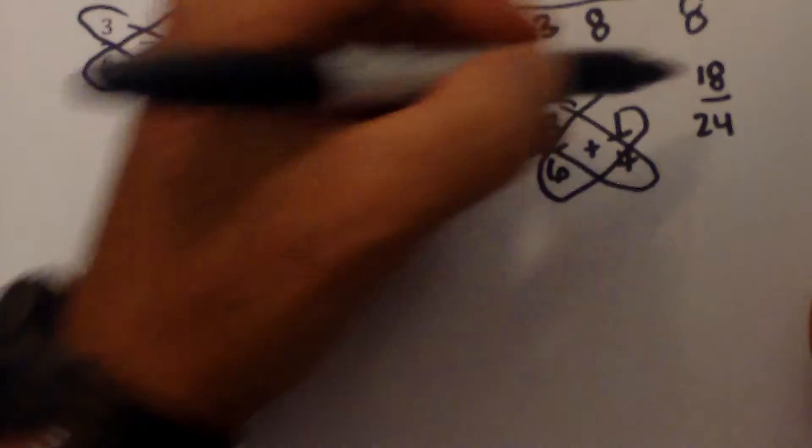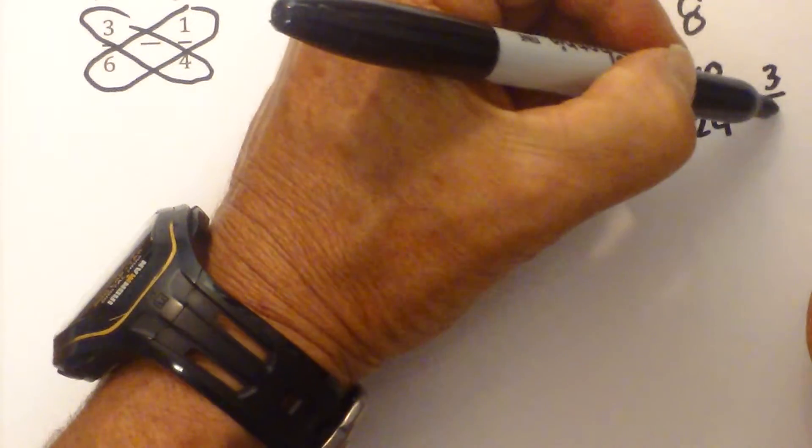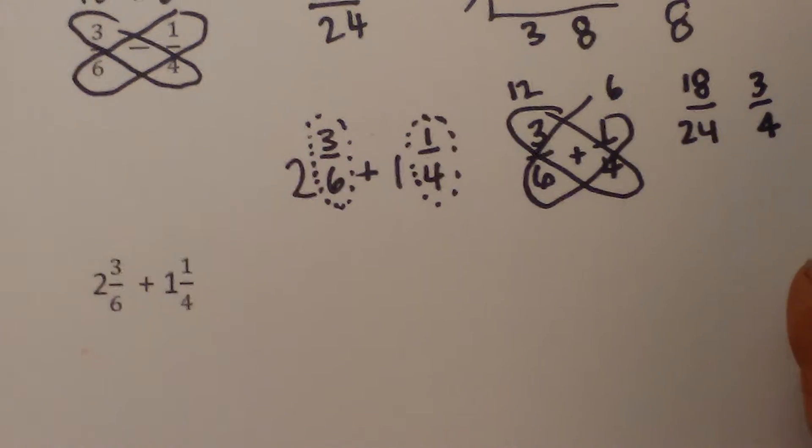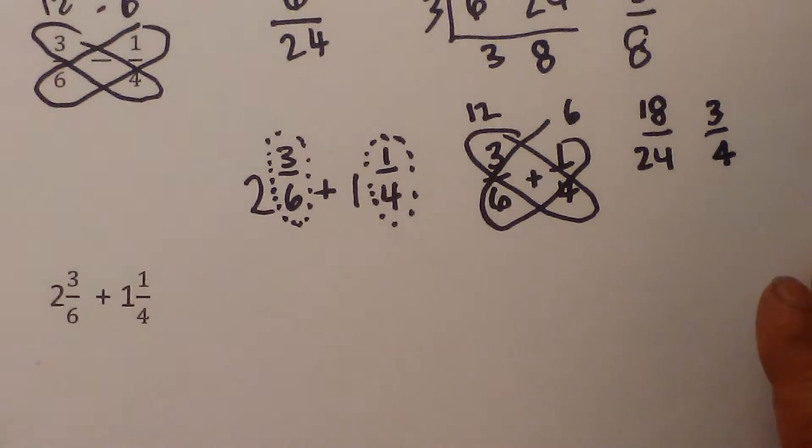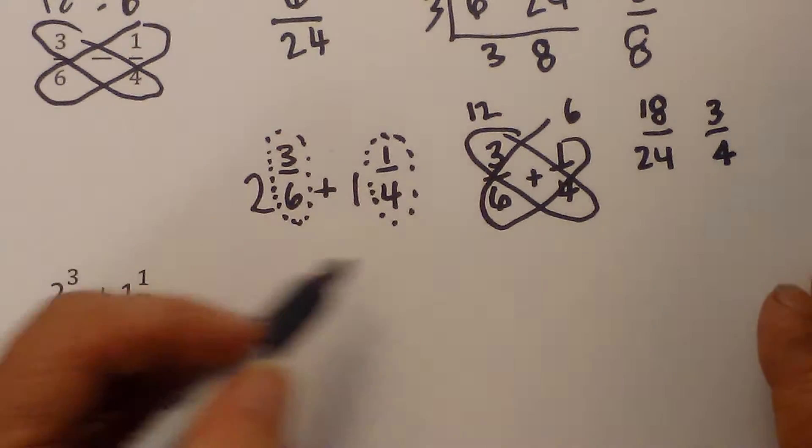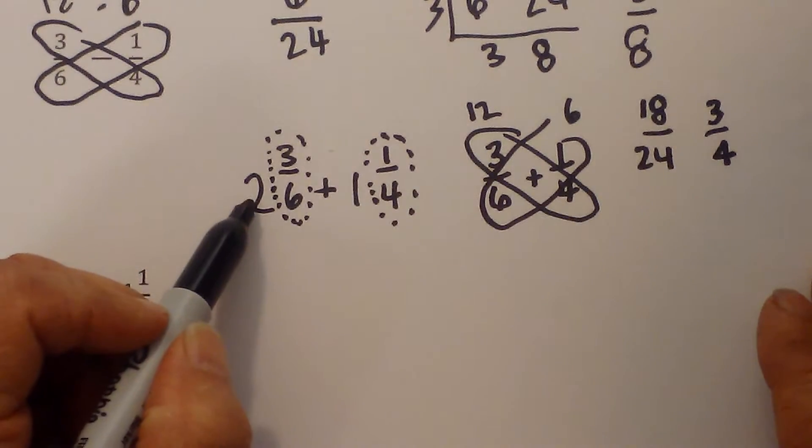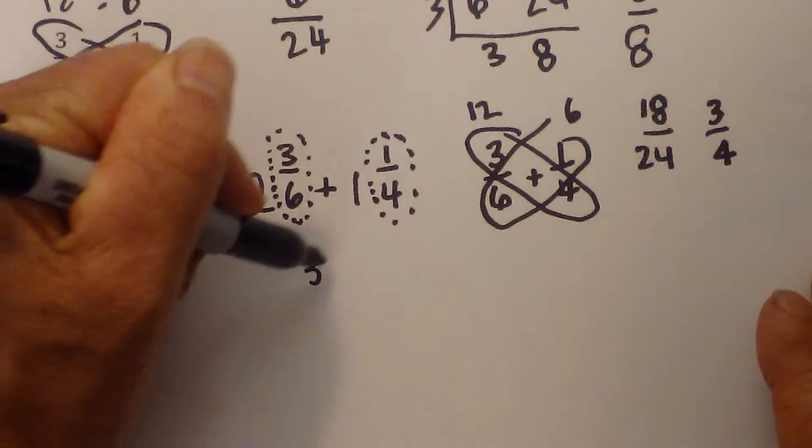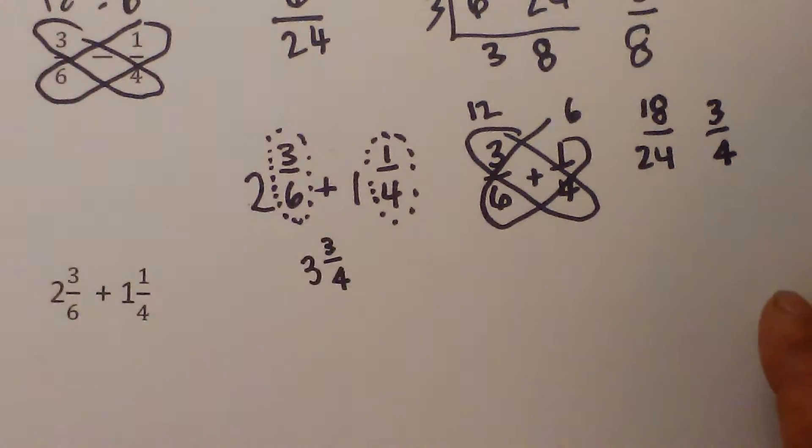And I know because I did this earlier it reduces to 3 fourths. And then what you do with this 3 fourths is you add. You have the fraction and then you add this to the two whole numbers. 2 plus 1 is 3 and 3 fourths. That is one way you can solve these.